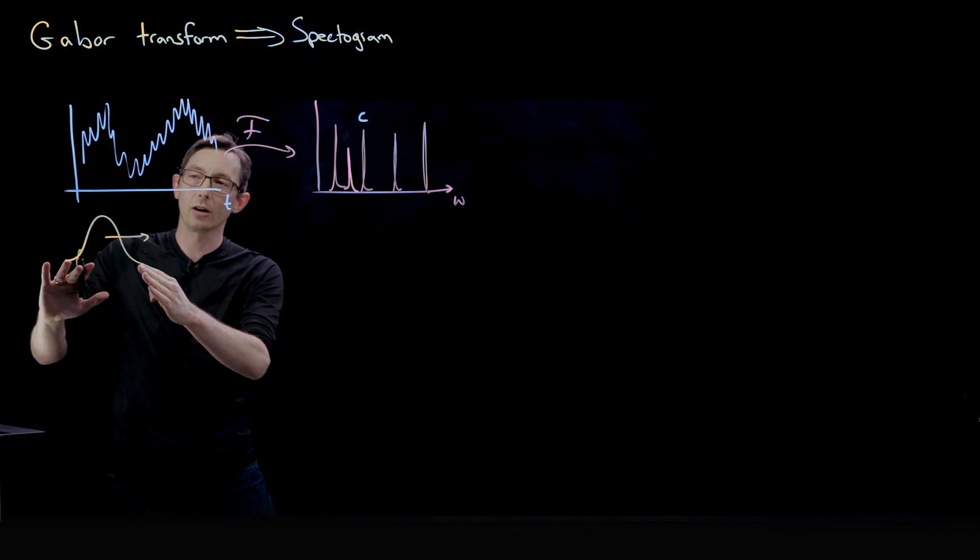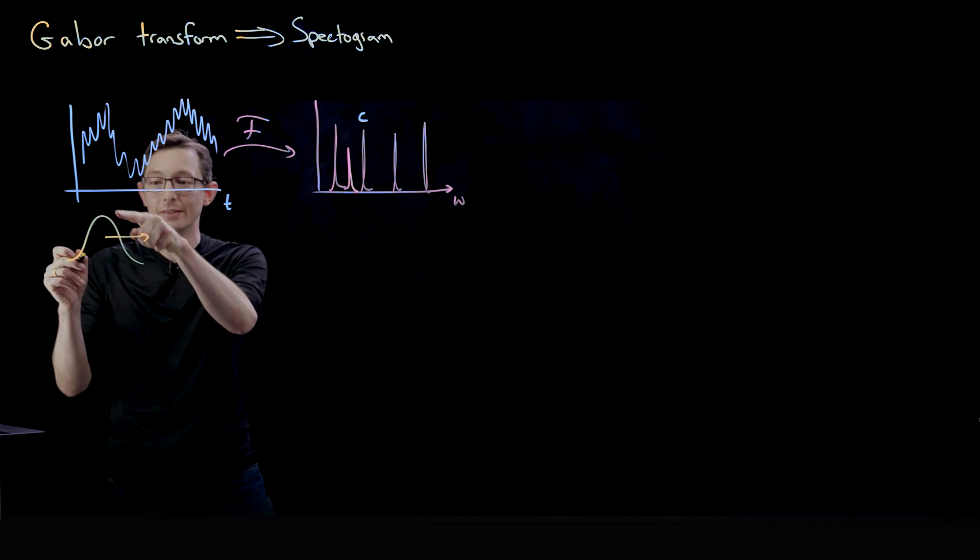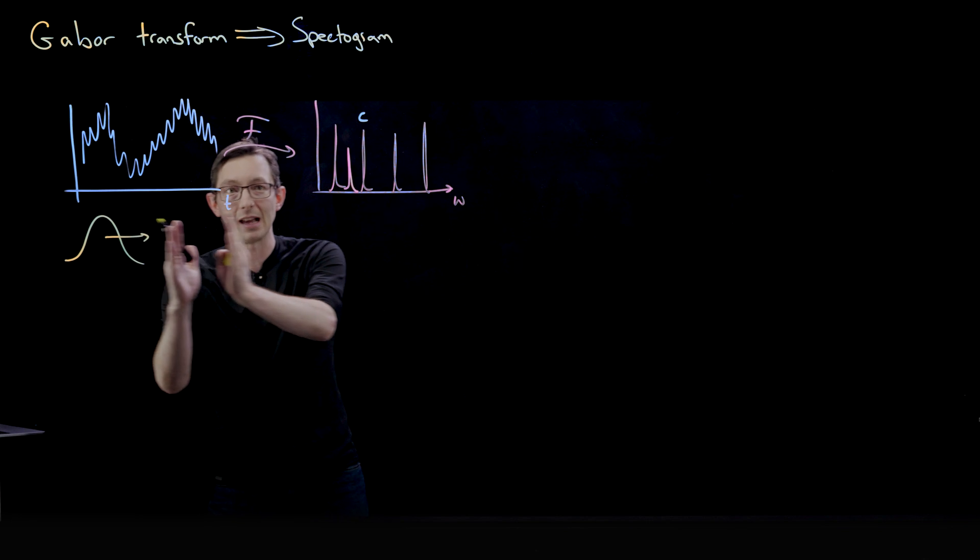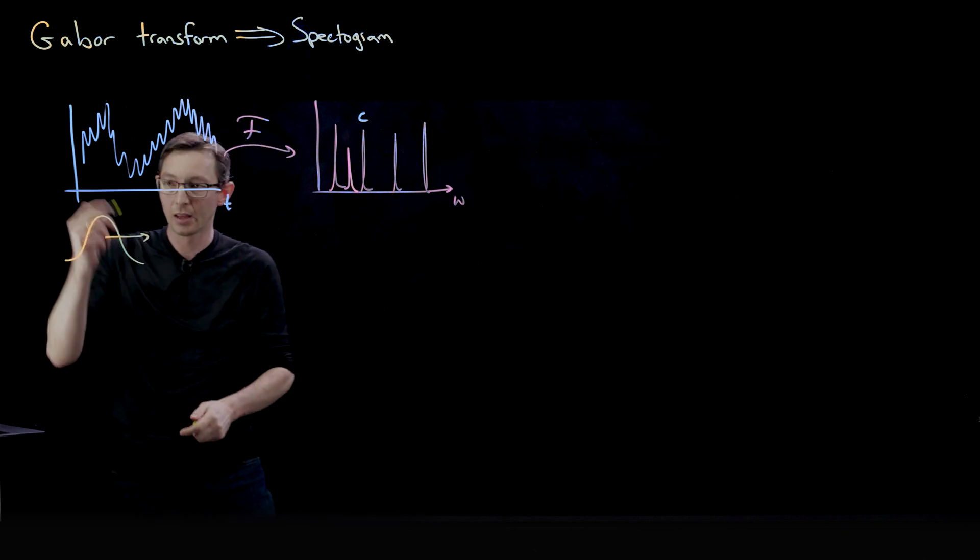So basically, we are computing a weighted Fourier transform only in this window, and we're moving that window across, we're sliding that window across the signal in time.